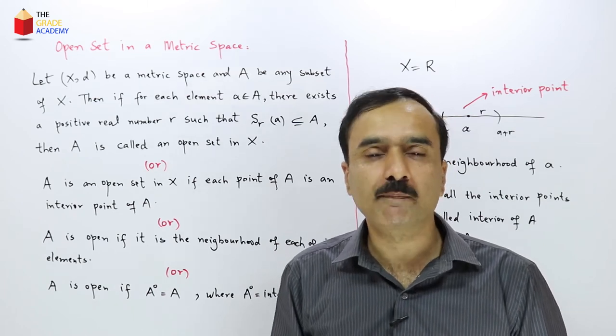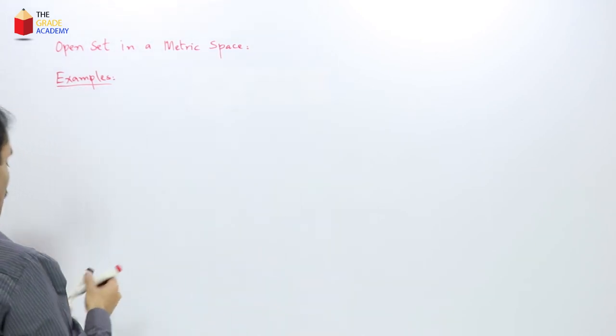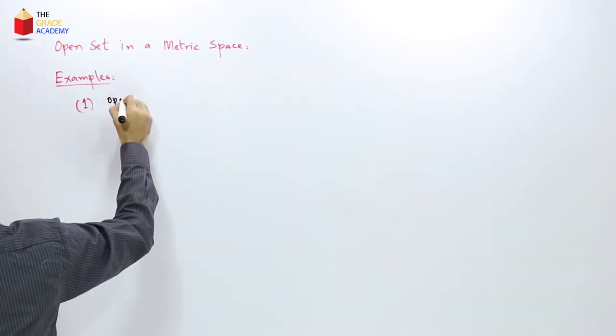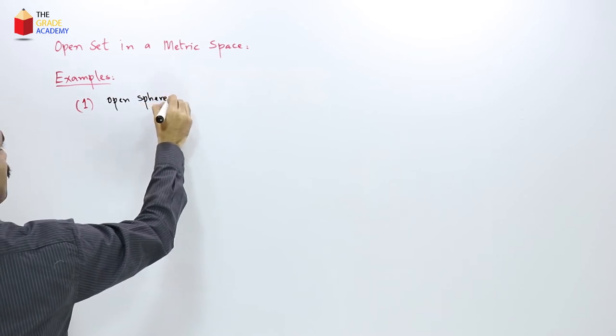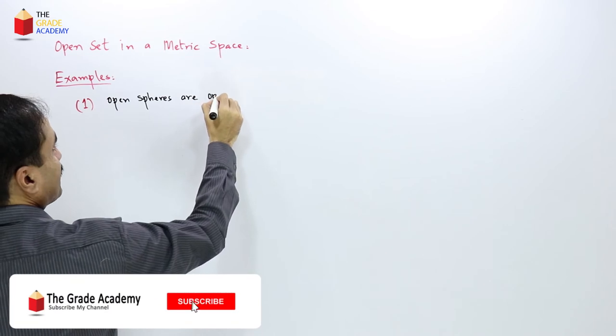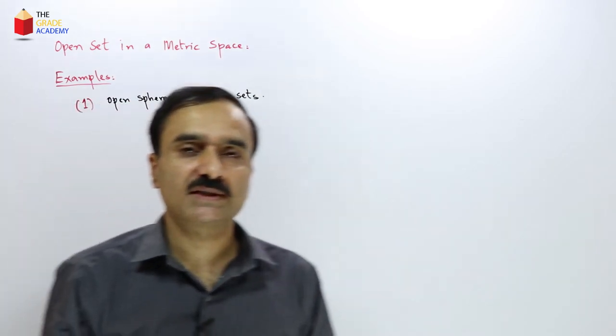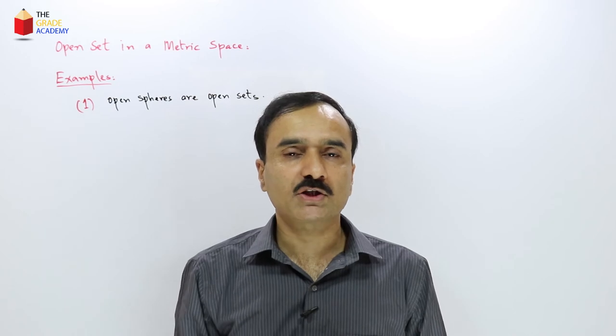Now let us give some examples of open sets. The first example is open spheres — open spheres are always open sets. If we consider our usual metric space of real numbers, then an open interval is an open sphere, so in the metric space R, an open interval will be an open set. In the metric space R, an open sphere of radius R centered at point a is expressed as the interval (a − R, a + R), and this is an open set.